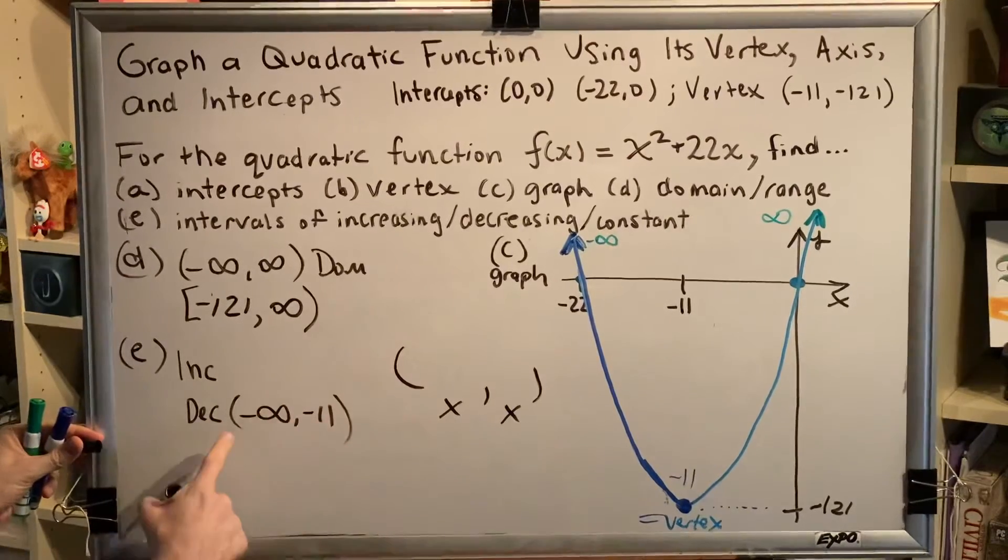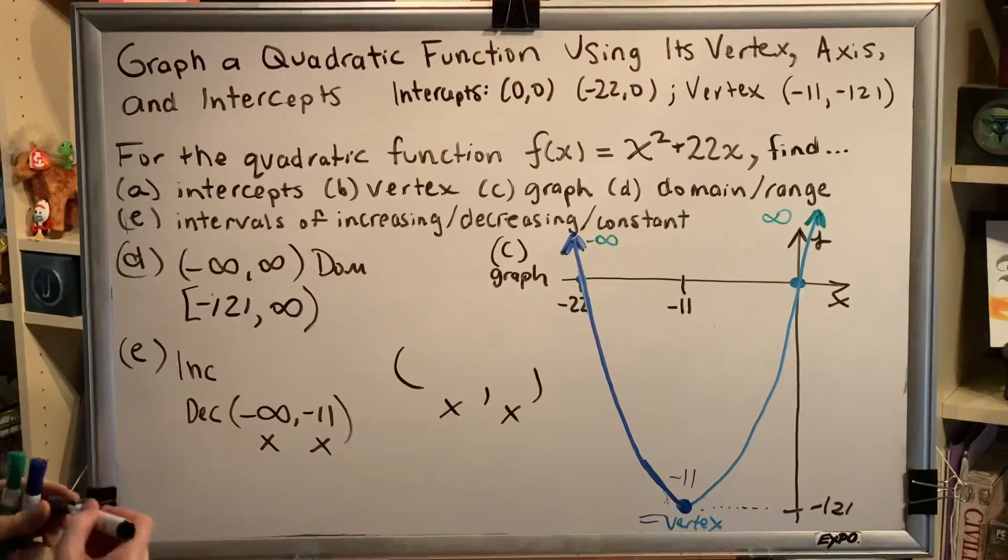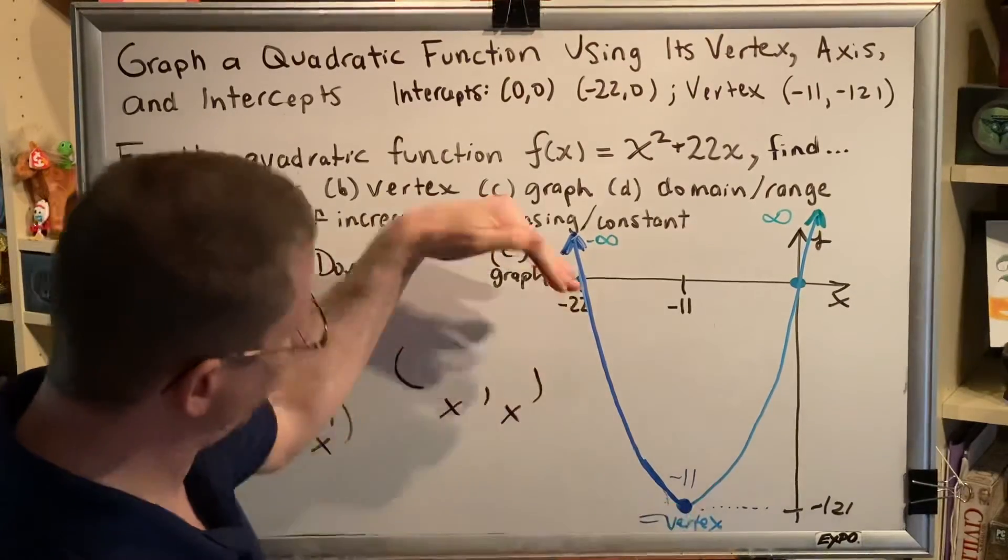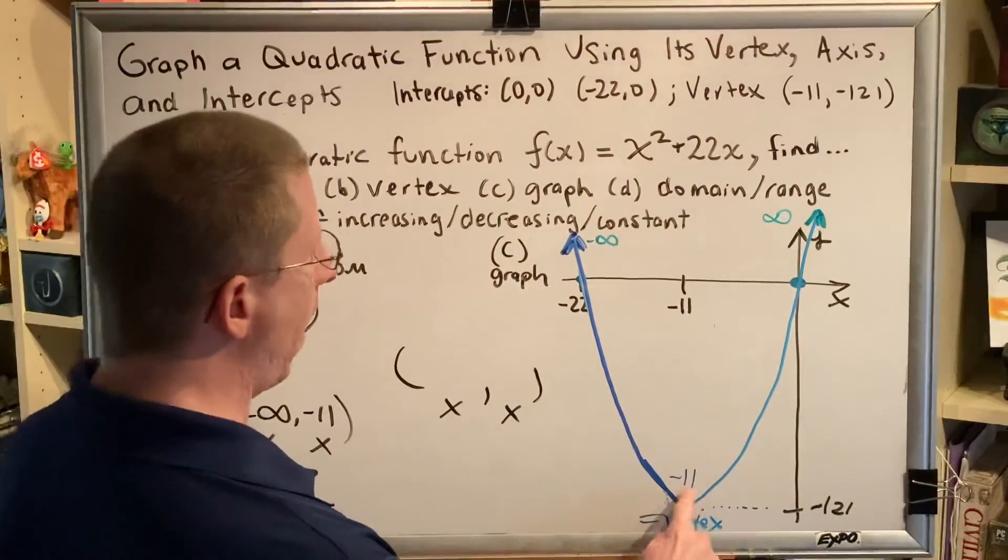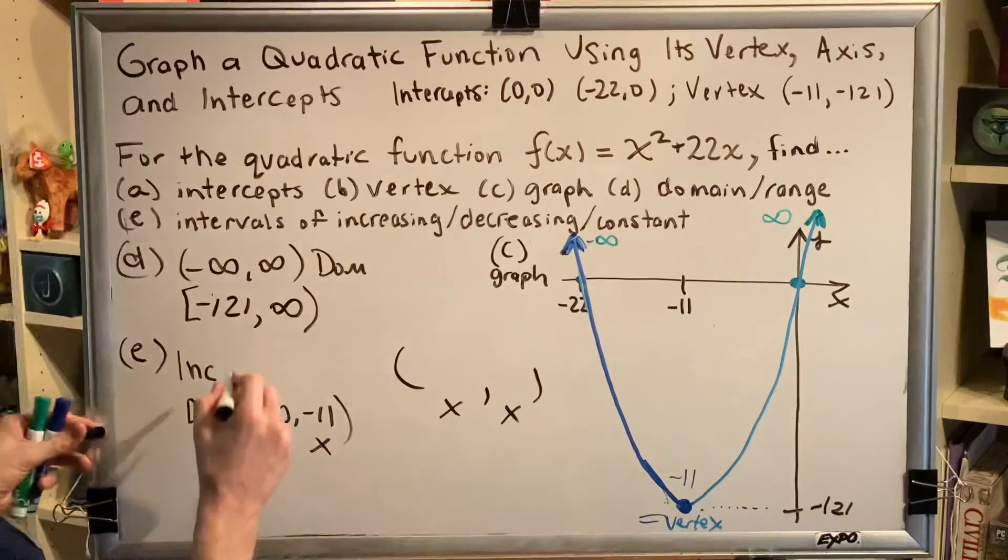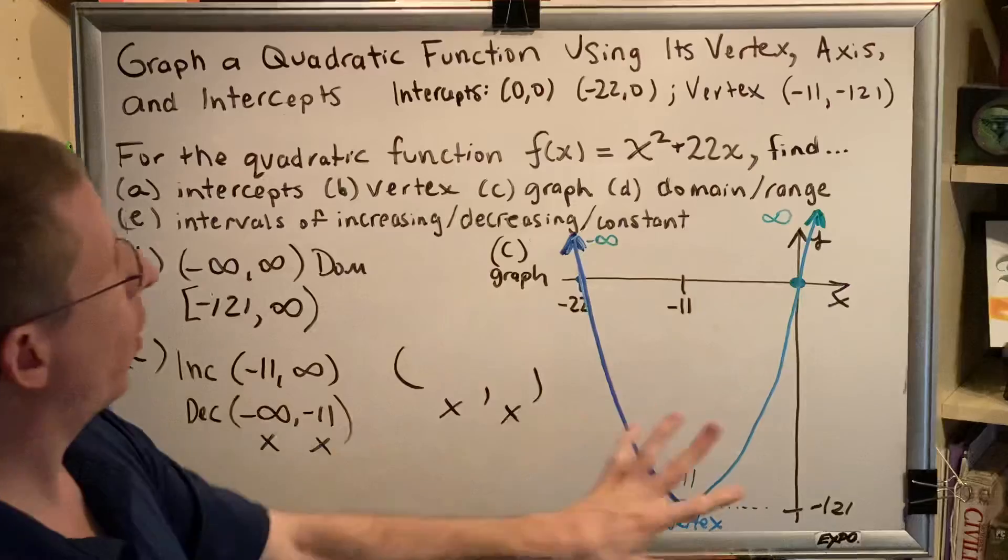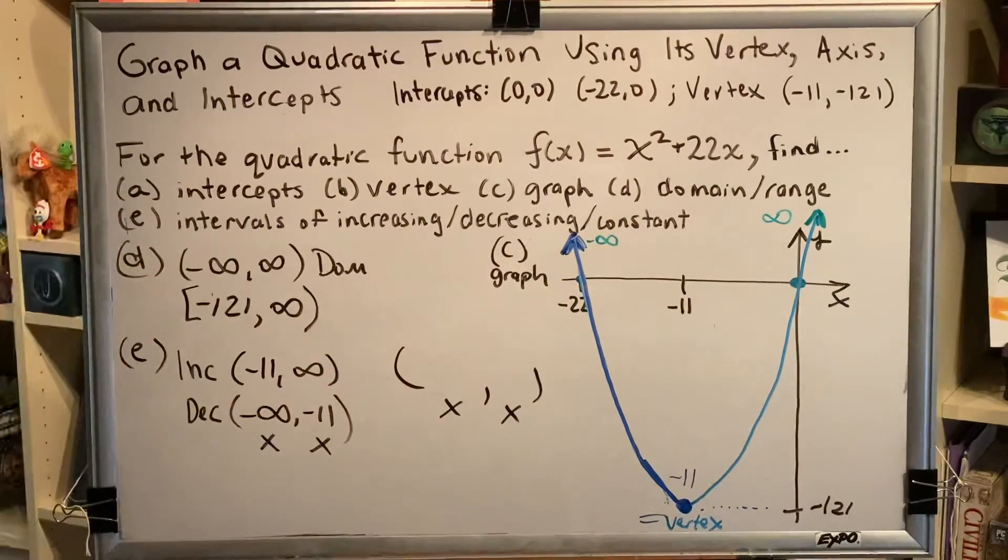And remember, it's always parenthesis, parenthesis, x value, x value for intervals of increasing, decreasing, and constant. Once we pass through the vertex, we're no longer decreasing. Now we are increasing. And we're increasing from negative 11 to infinity. So, negative 11 to infinity.